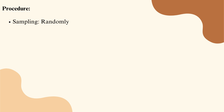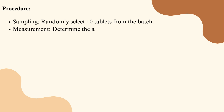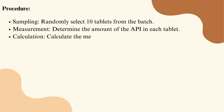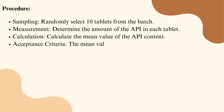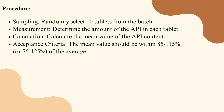Procedure: Sampling — randomly select 10 tablets from the batch. Measurement — determine the amount of the API in each tablet. Calculation — calculate the mean value of the API content. Acceptance criteria — the mean value should be within 85 to 115 percent, or 75 to 125 percent, of the average value.